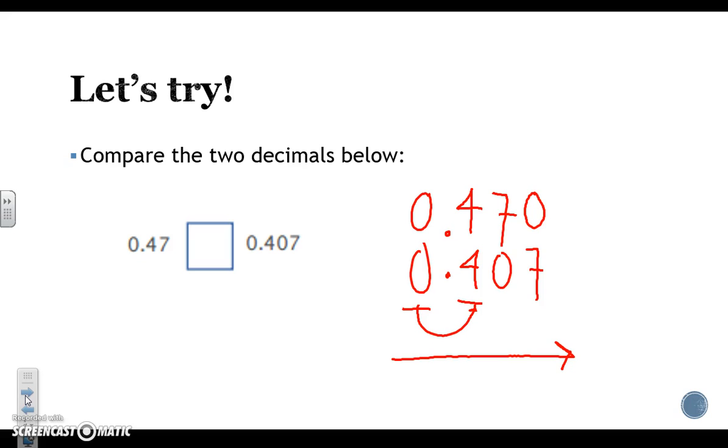We're now looking at our tenths place. We have a four in the top number, a four in the bottom number. Those are the same number. So we move to the next place value. We look at our hundredths place. We again look at our top number and our bottom number. We have a seven and a zero. Those two numbers are not the same. We use our basic number knowledge, which is bigger, a seven or a zero. We know that a seven is bigger than a zero and they're in the same place value, which means that this would be our greater number between the two.